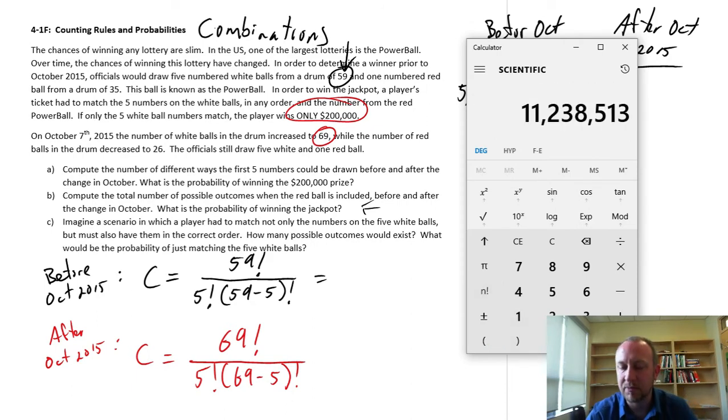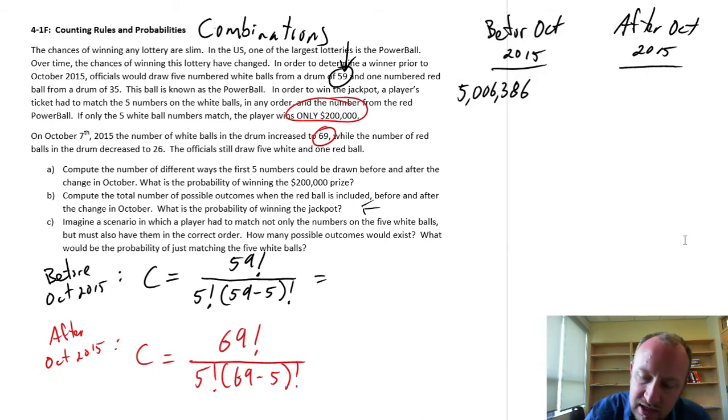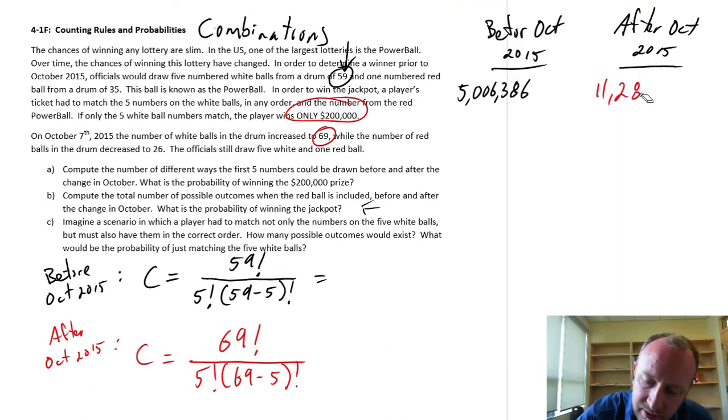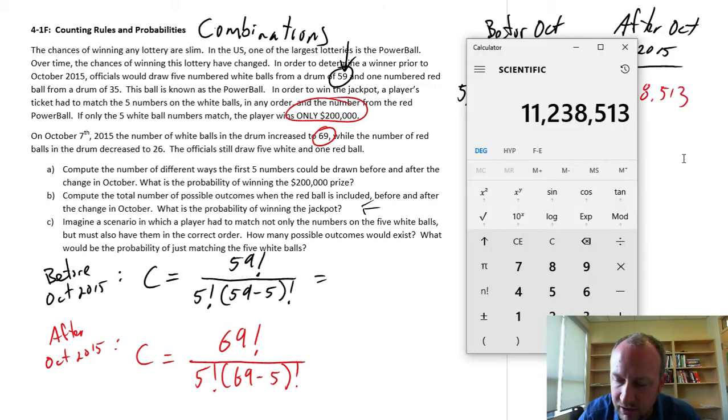So here, this is now 69 factorial divided by 5 factorial times 64 factorial, equals 11,238,513.